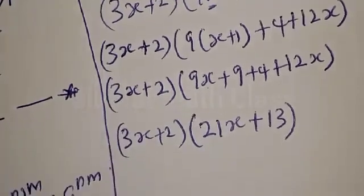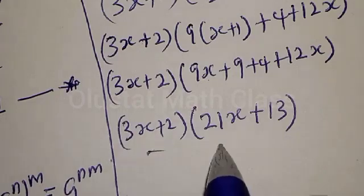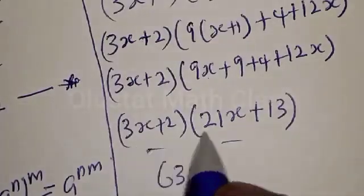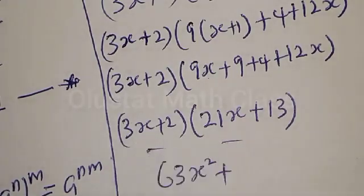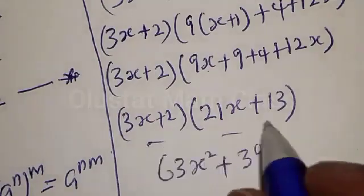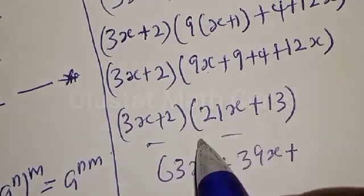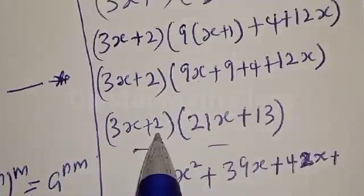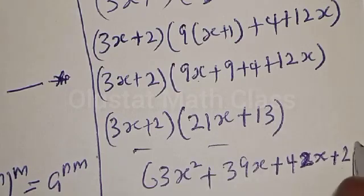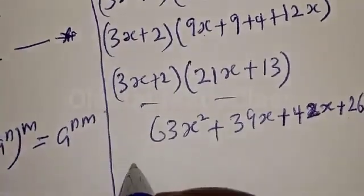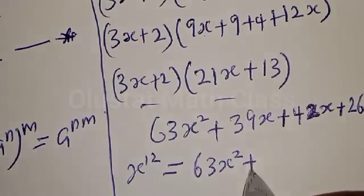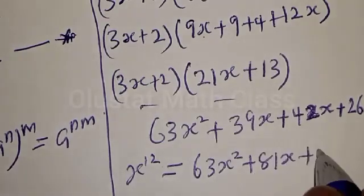Now we want to multiply these two brackets together. We have 3s times 21s, which is 63s squared. Then 3s times 13 is 39s. Then 2 times 21s is 42s. Then 2 times 13 is 26. Therefore our equation becomes s raised to power 12 equals 63s squared plus 39s plus 42s plus 26, which is 63s squared plus 81s plus 26.